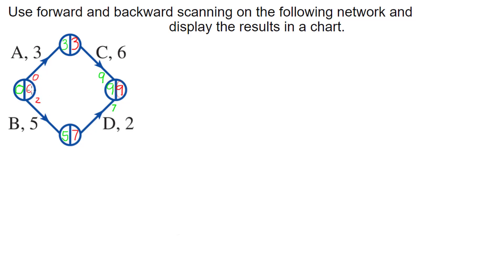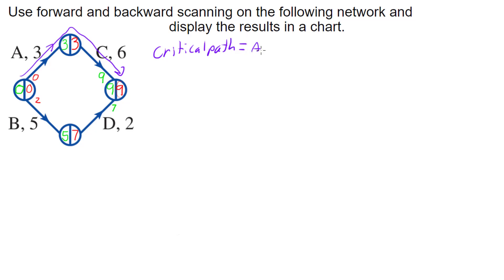When paths separate at a node going backwards, we take the smallest value — that represents the latest start time overall for leaving that node. The latest I can start from this node is minute zero, so I cannot delay A at all — that identifies my critical path. I can still wait a little for B though. The critical path is the one with no delays, where all the numbers match up: zero, zero, three, three, nine, nine. So the critical path goes through A and C. I have two minutes spare along the B and D path.